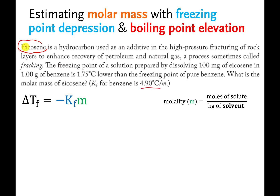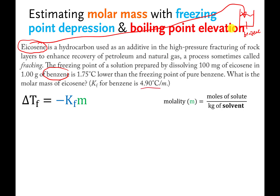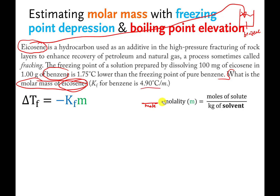We are interested in this molecule called icosine, and icosine is going to be dissolved in a different liquid called benzene. Benzene is a liquid — it's one of the components in gasoline — and we're adding a little bit of icosine to it. The question is: what is the molar mass of icosine? Molar mass is written as grams per mole, so they want to know how many grams per mole icosine has. It's going to take a little bit to get there.